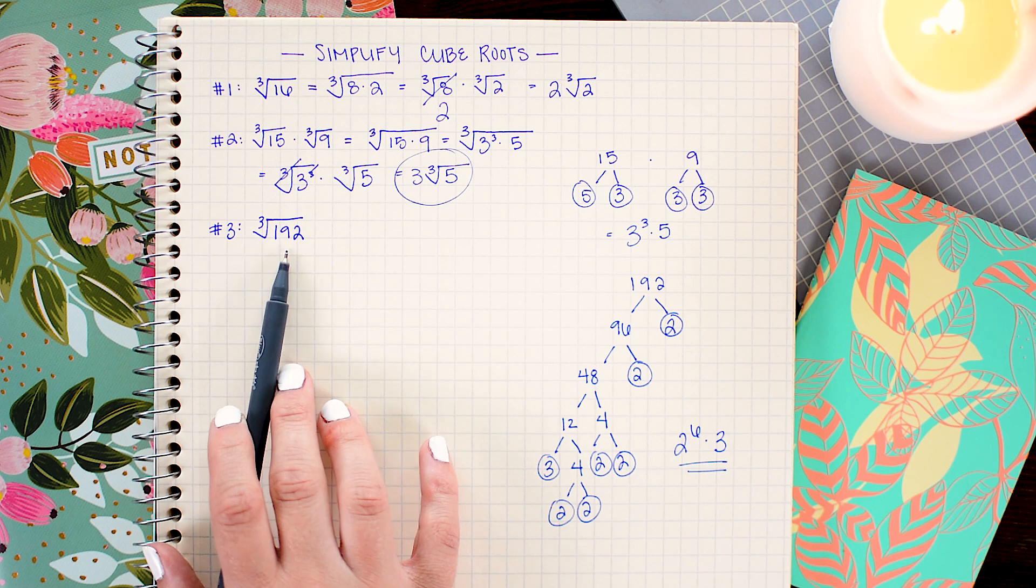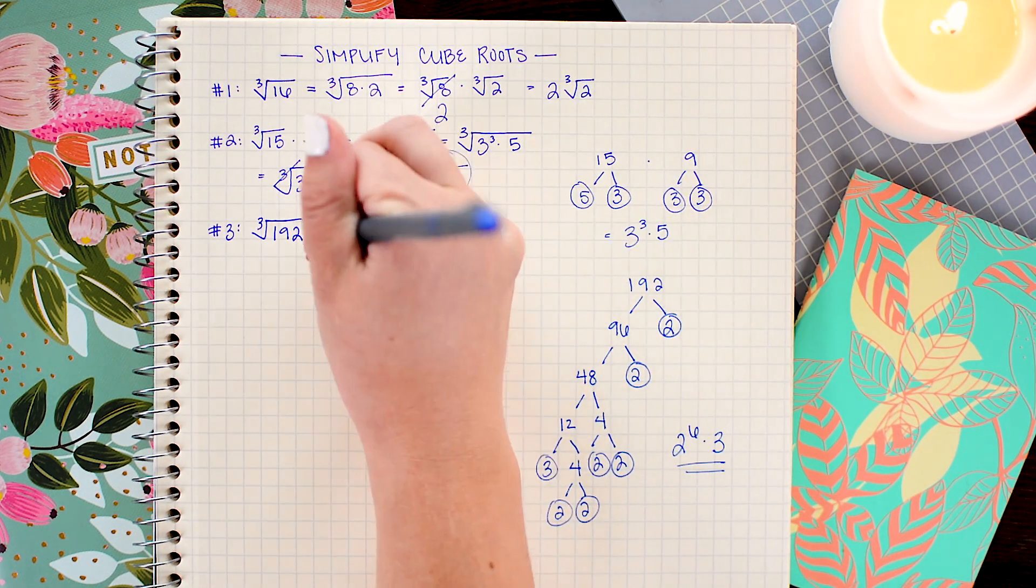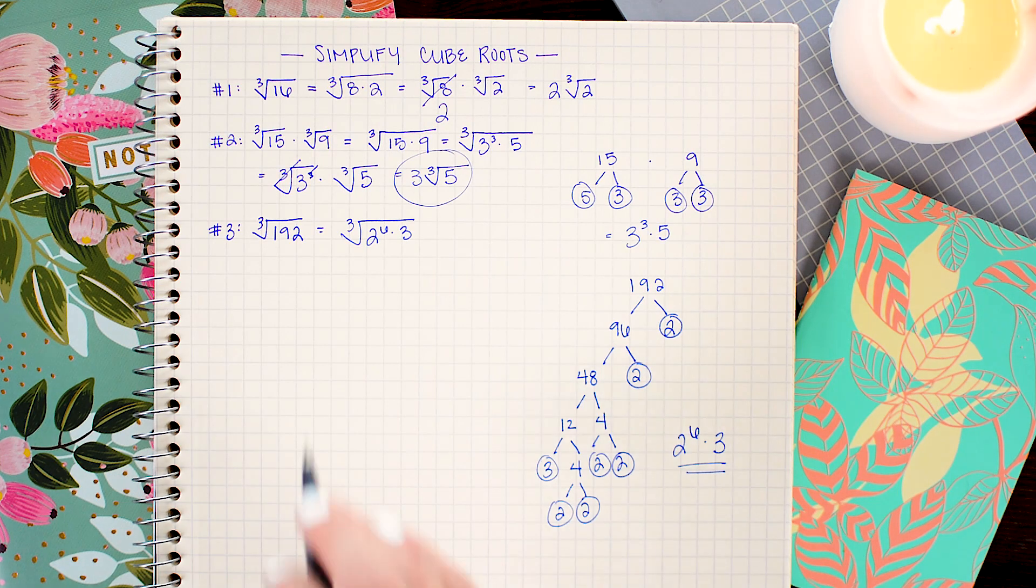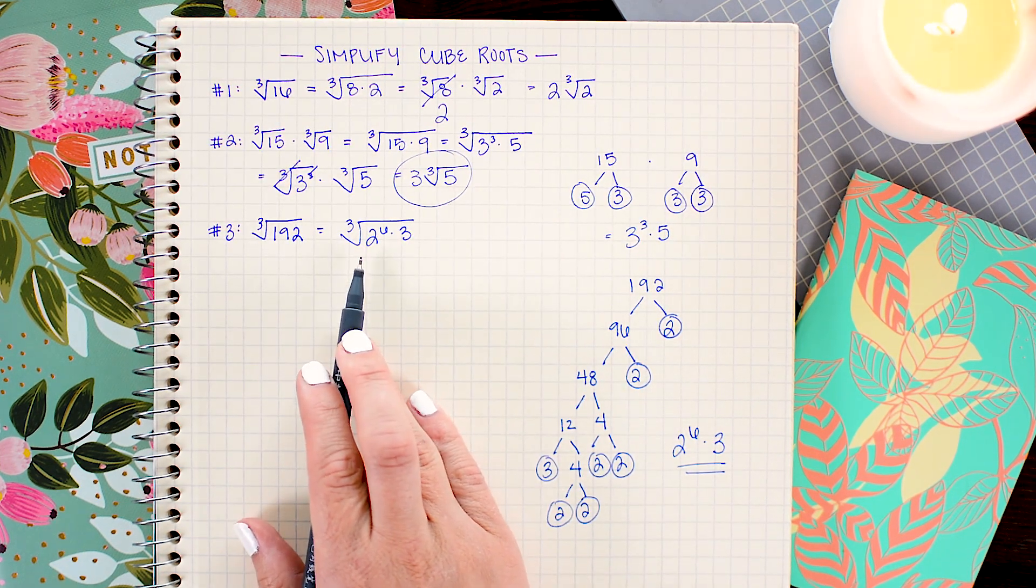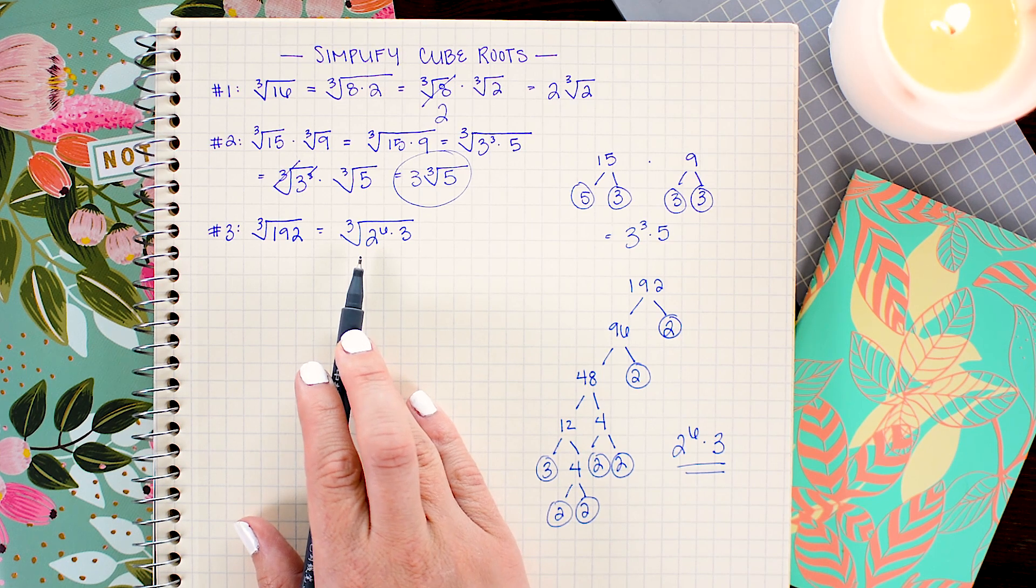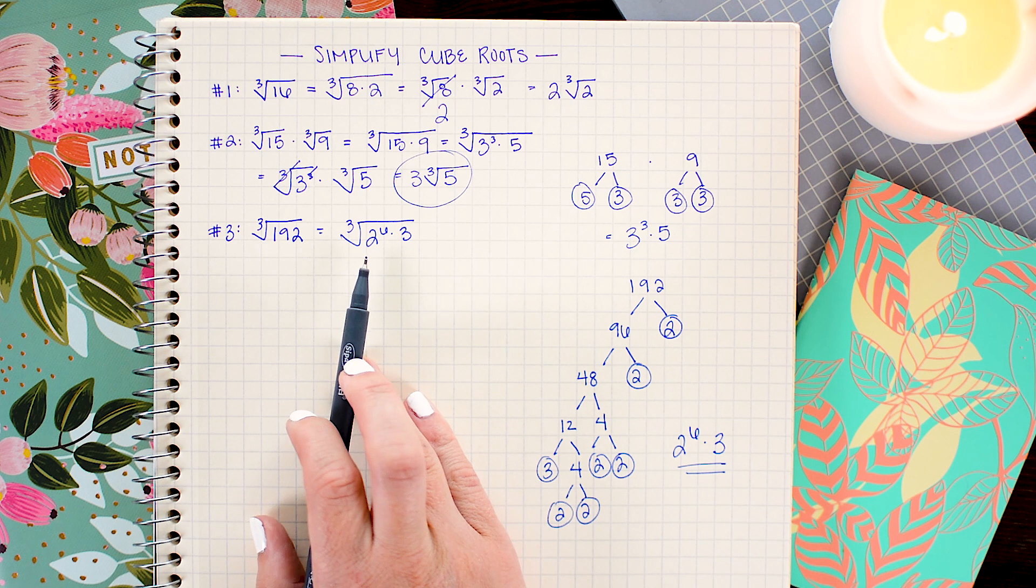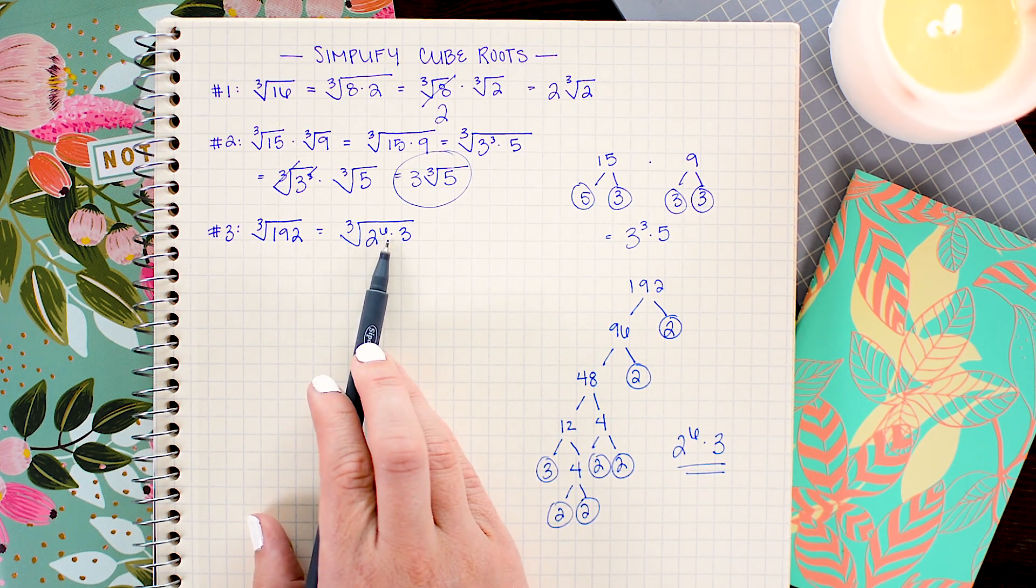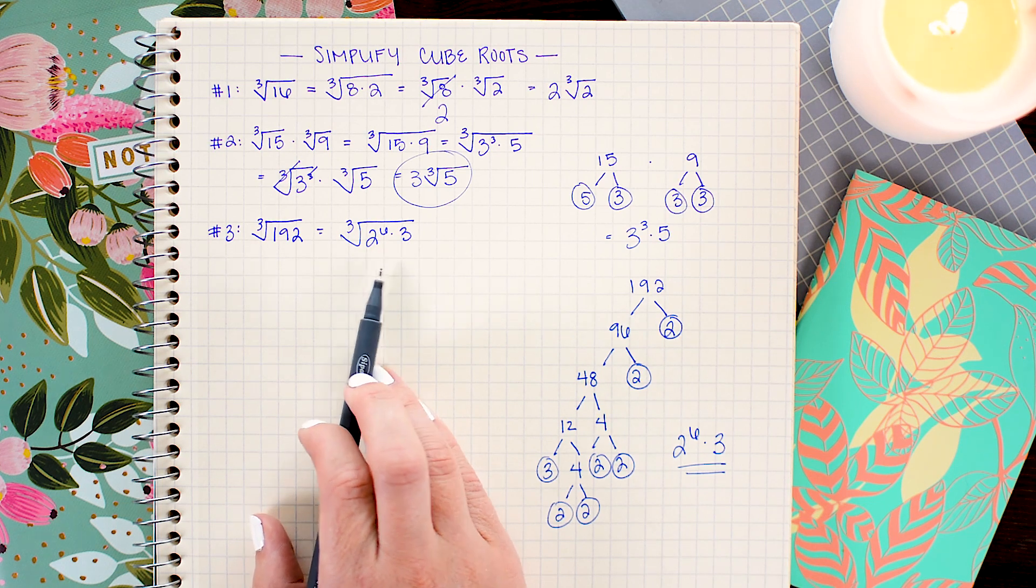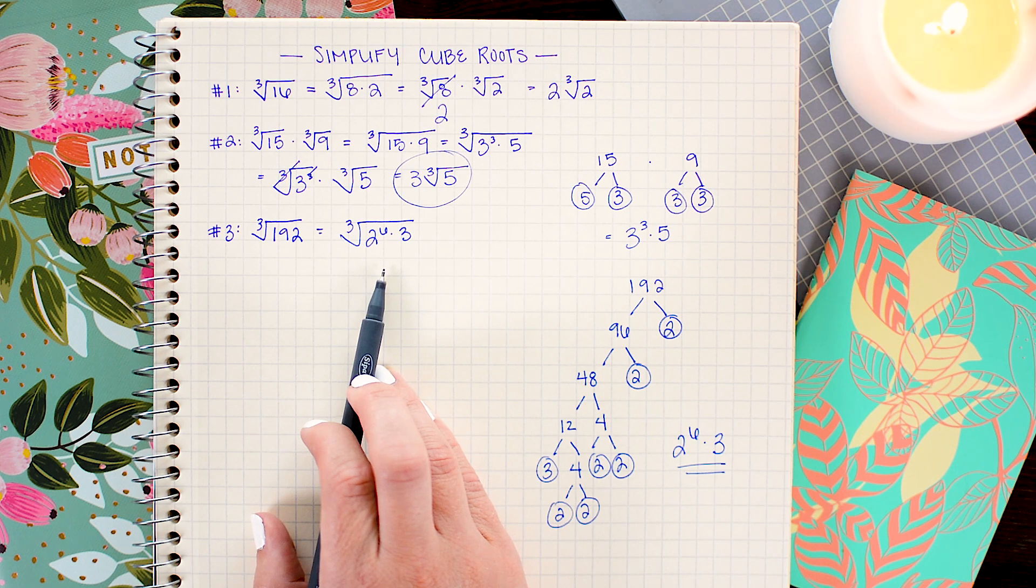So I'm just going to go ahead and replace 192 with its equivalent prime factorization. Just like we've been doing in the previous problems, I'm going to split this into separate cube roots. And to make it a little bit easier in the next step, I'm going to break out every group of 3 that I can. So that means I'm going to split 2 to the 6th power into 2 cubed times 2 cubed. And you'll see in the next step how easily we can simplify this problem when we do that.